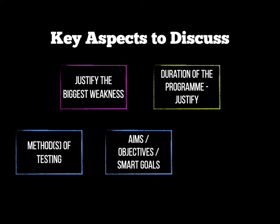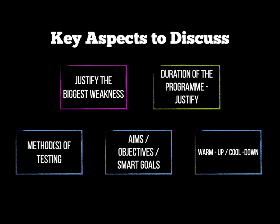Once you've established your testing method, give clear aims or objectives for your training program — this links back to the method of testing. For example, one objective might be to increase a netball shooter's shooting success percentage by 5% within an eight-week period. It must be realistic; there's no way a performer can improve by 50 or 60% in eight weeks. Goals must relate to SMART principles, which you've learnt this year. Don't forget warm-ups and cool-downs when discussing training sessions.